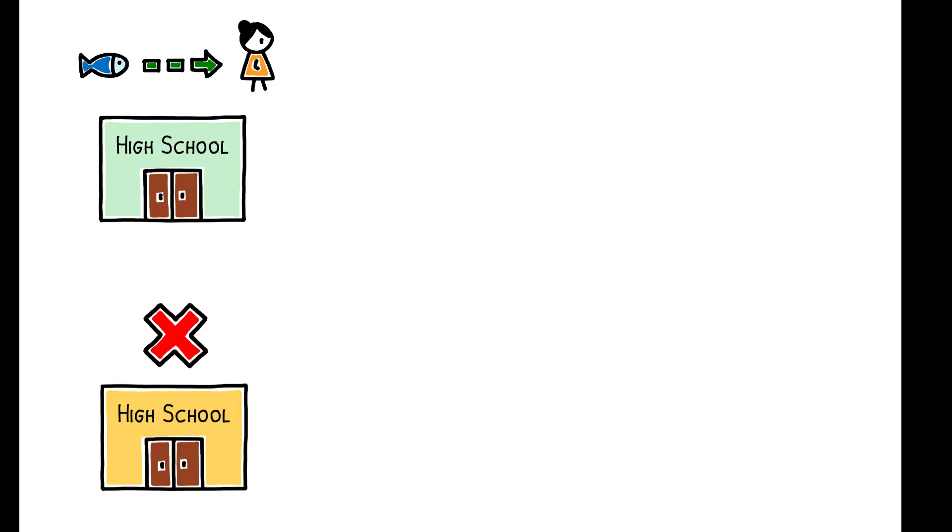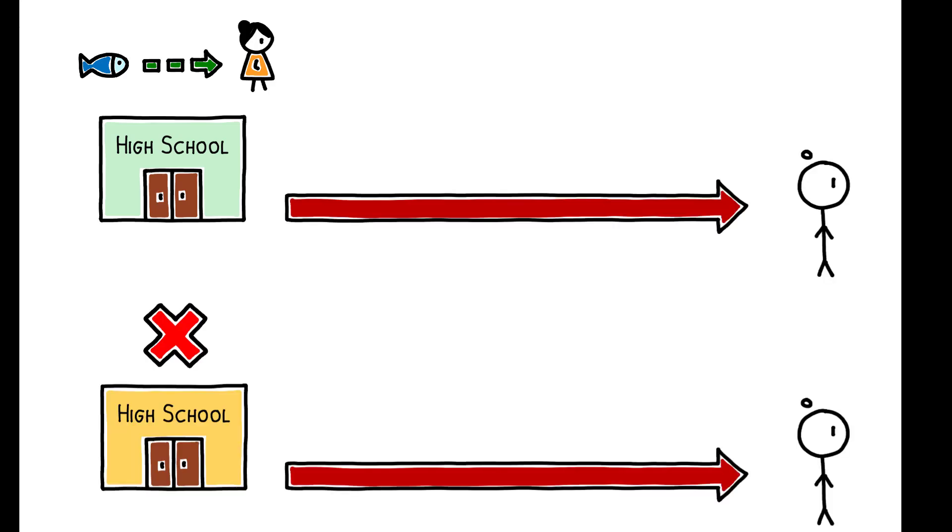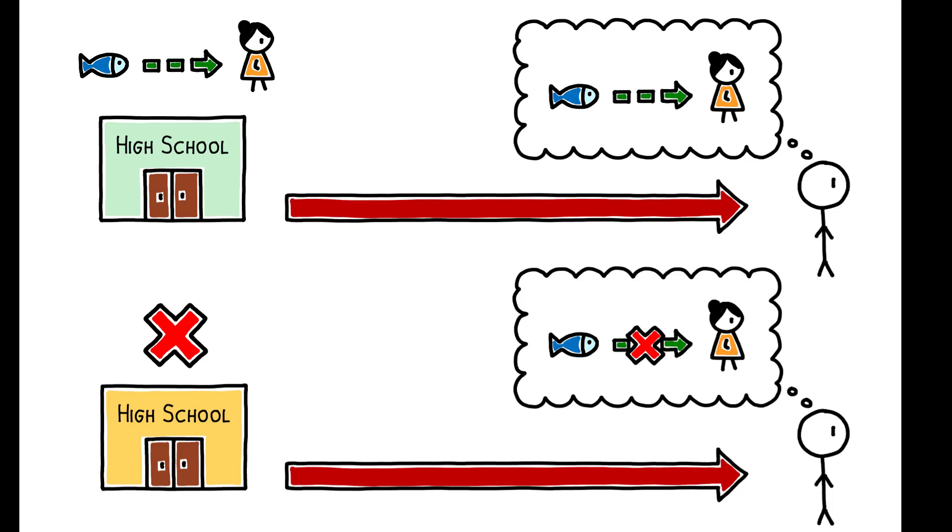He finds that individuals who were exposed to an evolution score of 1 in high school, as opposed to a score of 0, are 57% more likely to believe in evolution in adulthood. This corresponds to a persuasion rate of 79%, and indicates that the impact of these reforms persists long after students have left school.